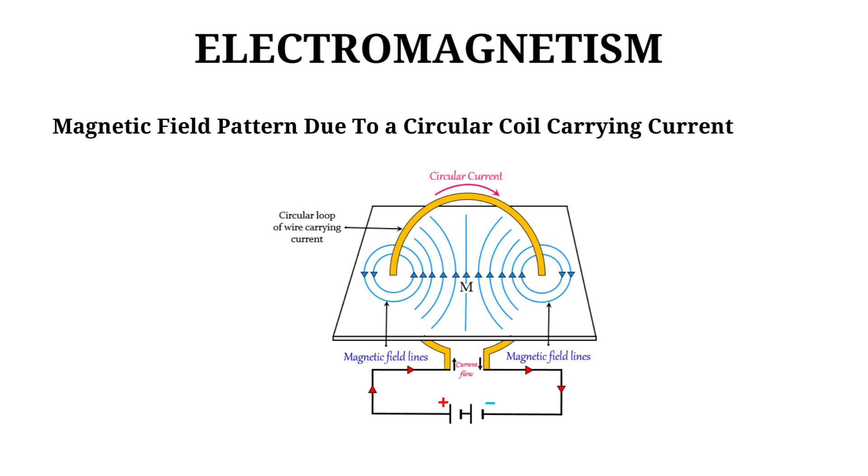When a current is passed through a circular coil, a magnetic field is produced around it. At the center of the coil, all the lines of force aid each other due to which the strength of the magnetic field increases.